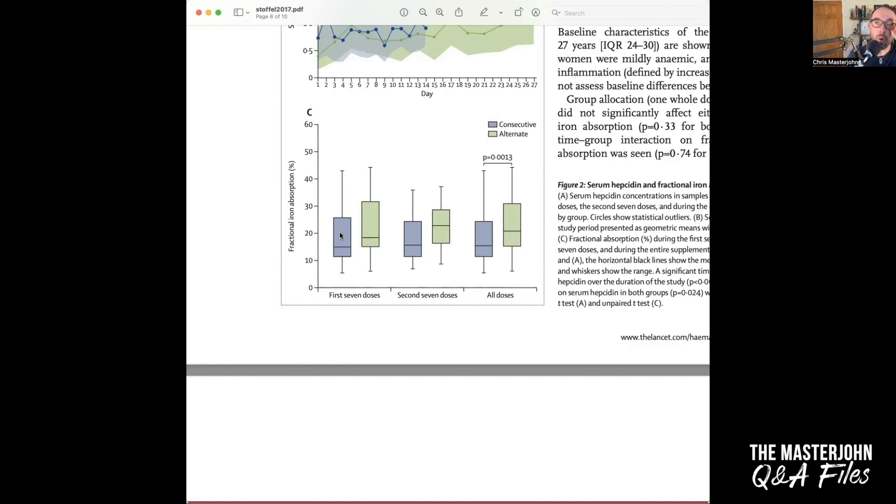Now, you can say, well, what if they had doubled the dose every other day? The answer is that hepcidin doesn't just increase in response to the iron you just took. It increases in response to your total body iron status. So, if you double the dose on the alternate days, you'll make up for this not doubling the fractional absorption, but you will get more hepcidin in response to it and your fractional absorption benefit will disappear.